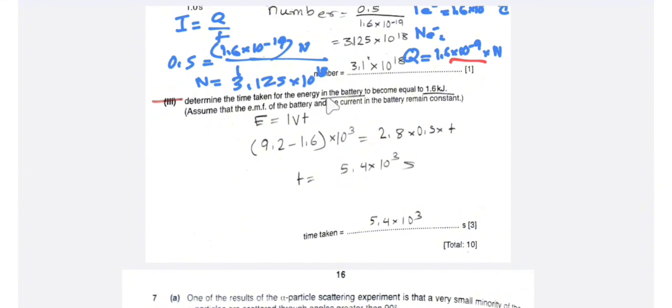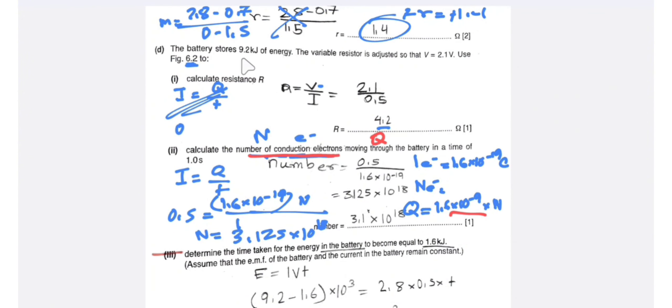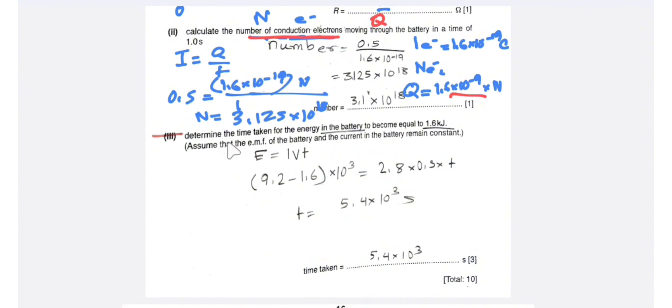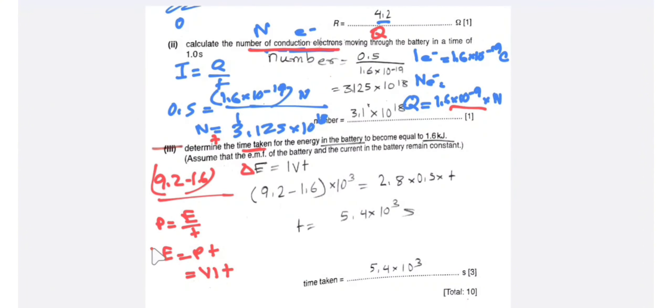Determine the time taken for the energy of the battery to decrease from 9.2 kJ to 1.6 kJ. The change in energy is 9.2 - 1.6 = 7.6 kJ. Using the relation: energy = power × time = V × I × t, we need to find the time for this energy decrease.